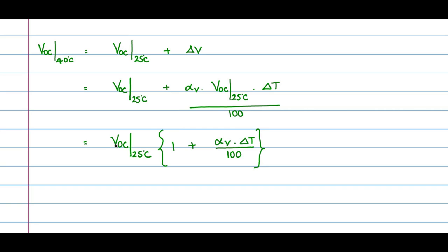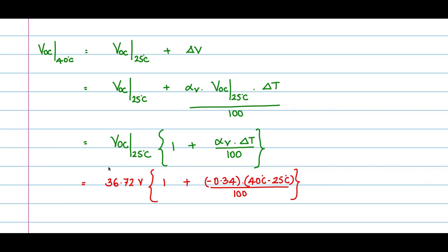Factoring out the common term, Voc at 40 degree C equals Voc at standard temperature multiplied by 1 plus alpha_v times delta T divided by 100. Substituting the data sheet values — 36.72 volts for Voc, alpha_v equals minus 0.34 (note the minus sign since Voc decreases with temperature), and a temperature rise of 40 minus 25 equals 15 degrees — this amounts to minus 0.051, pulling the open circuit voltage down to 34.847 volts. As temperature increases, the open circuit voltage drops.